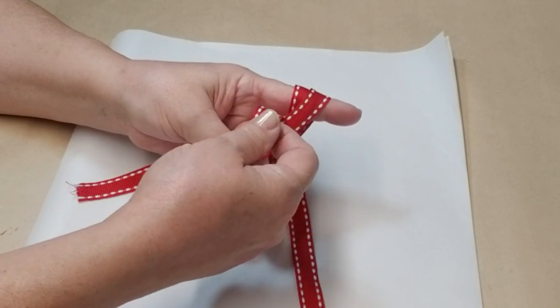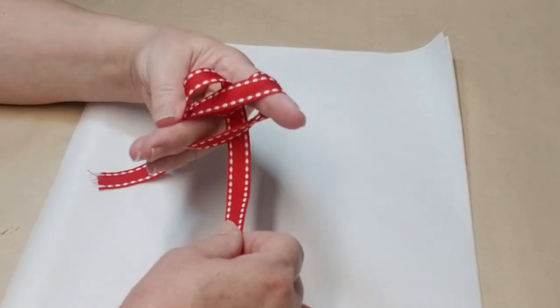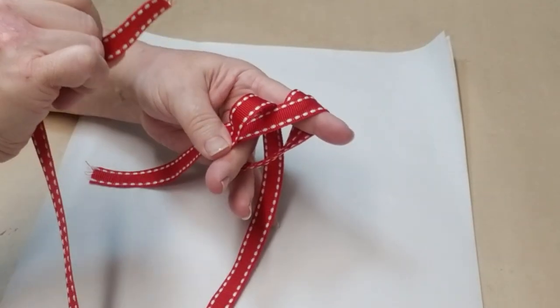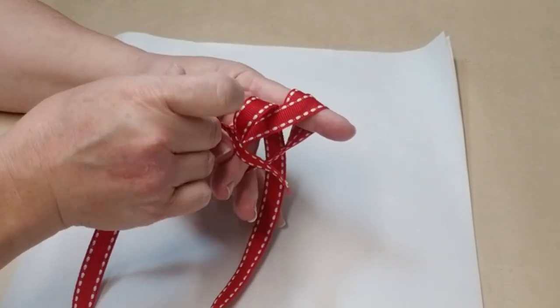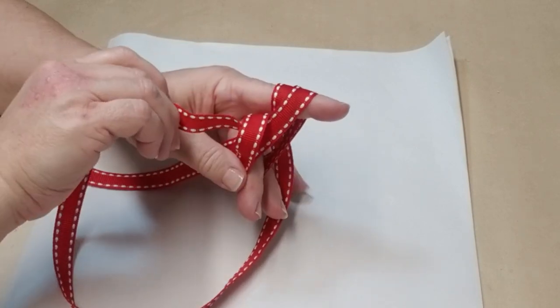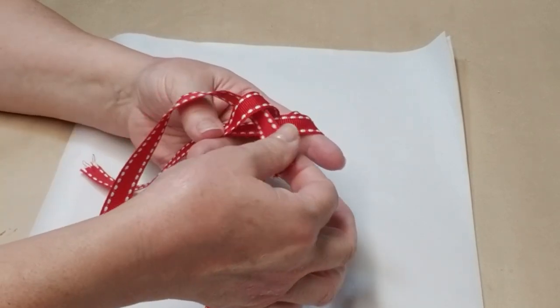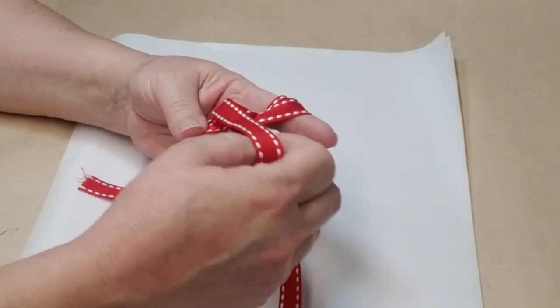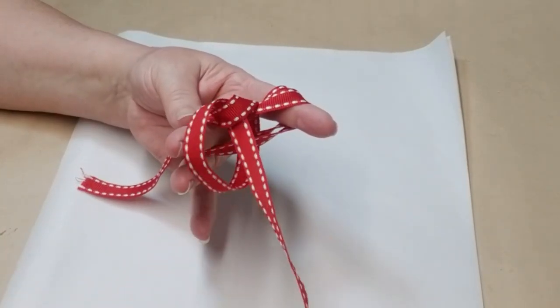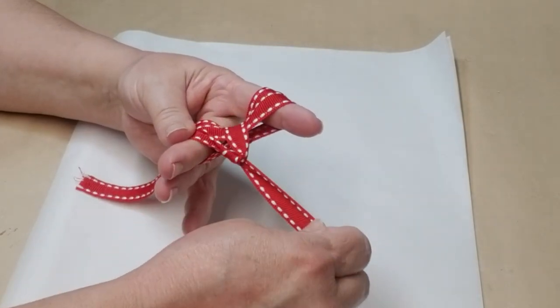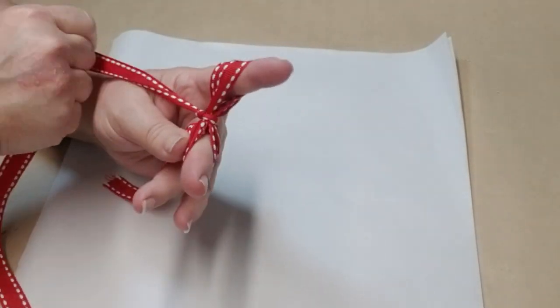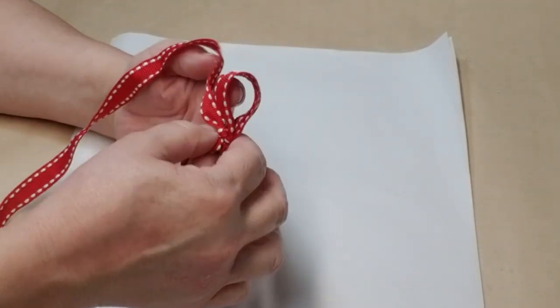Take the end of your ribbon again and pull it through the bottom portion of this loop. So take it, feed it from the bottom, and push it all the way up so it's moving away from your hand, away from your fingers. Make sure that the loop is in the center as shown and then just go ahead and pull it tight and move it back and forth until you get the tails both down in the same direction.